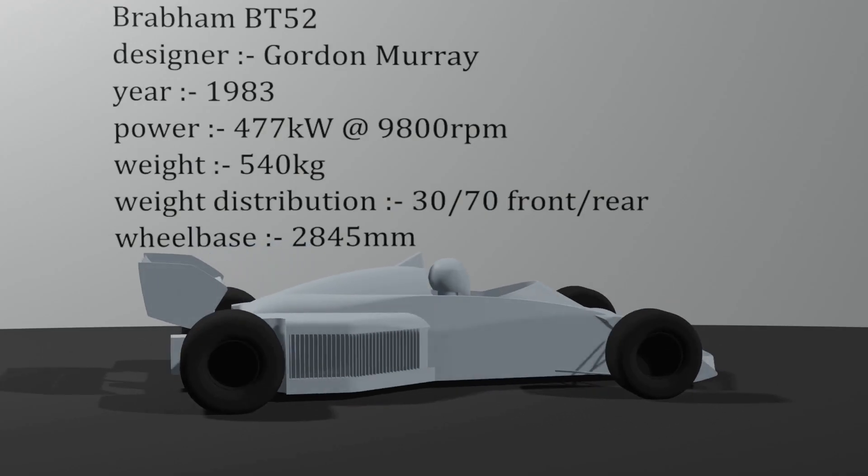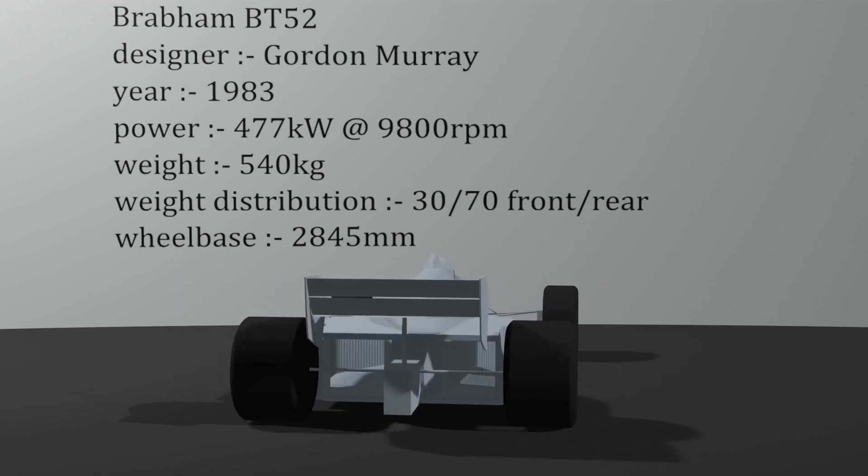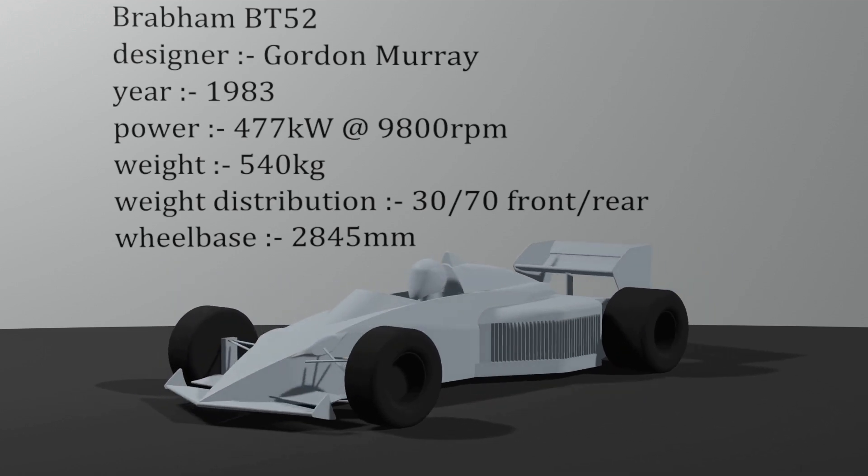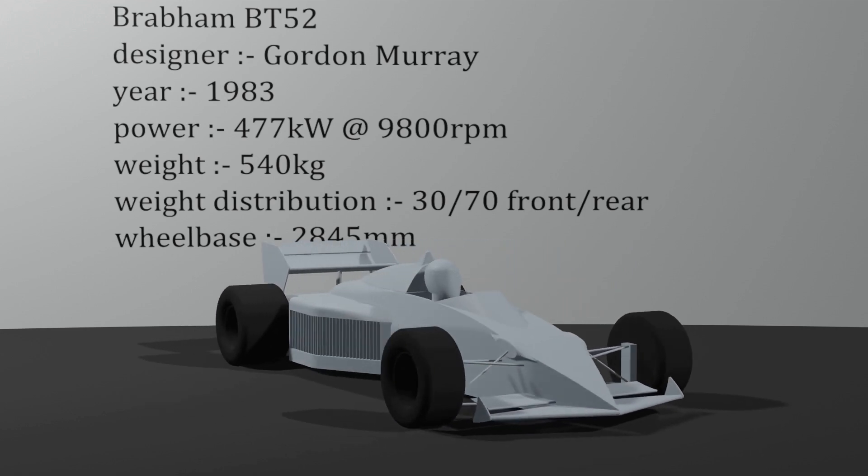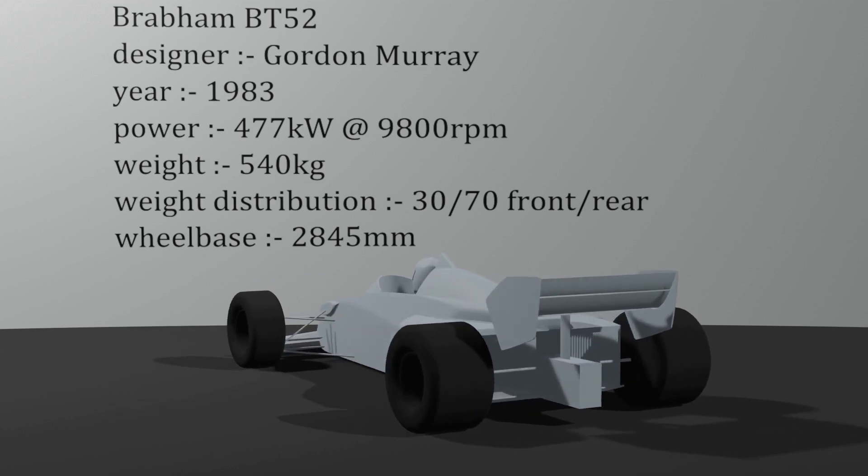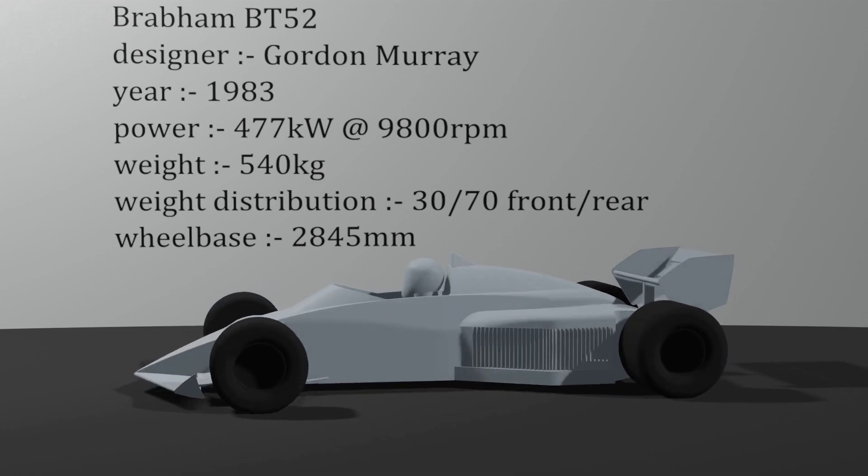With the BT52 born from this small window of time, the result was a car that could be called highly aesthetic. It is considered by some one of the most attractive Formula 1 cars of all time. It is at least one of the most unique. It was also successful giving Nelson Piquet the world championship that year.